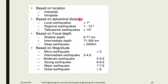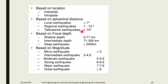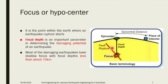Next, classification is based on epicentral distance. If it is below 100 km, it is a local earthquake. If the earthquake occurs between 100 to 1000 km, it is called a regional earthquake. Teleseismic earthquakes are greater than 1000 km. There is a difference between focal depth and epicentral distance.